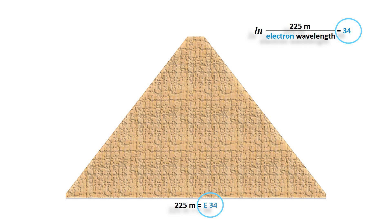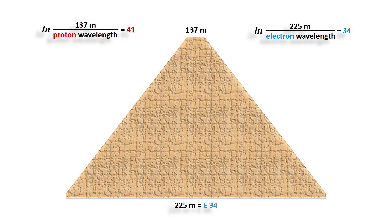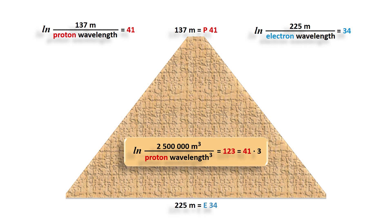Considering later expansions, removals, and repairs, the upper platform on the Great Pyramid is at a height of 137 meters. That is also the height of the neighboring Pyramid of Khafre. This height approximates the 41st power of Euler's number relative to the wavelength of the proton — we write P41 in red. Engineers estimate the current volume of the Great Pyramid to be 2.5 million cubic meters. That would approximate the 123rd power of Euler's number relative to the cube of the wavelength of the proton. Notably, 123 equals 3 times 41, meaning the volume of the Great Pyramid equals the cube of its actual height.